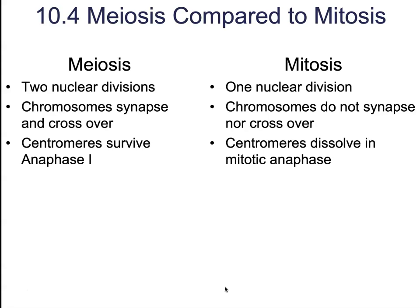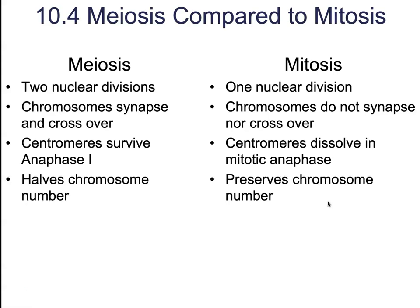The centromeres are going to survive anaphase 1, meaning that in that first stage of anaphase, all we're doing is separating the homologous chromosomes — going from diploid number to haploid number — but we are not separating sister chromatids at the centromere. Unlike mitosis, during the mitotic anaphase, we're going to see instant separation of those sister chromatids.